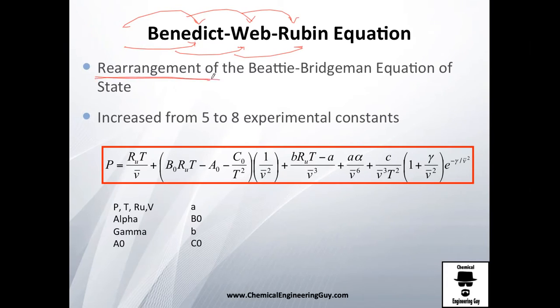They rearranged the data and all these fixes and corrections on the Beattie-Bridgeman equations, and they increased from 5 to 8 experimental constants, which is not good for us because it's difficult to calculate, but actually it's pretty good for the model because it's going to improve the model.